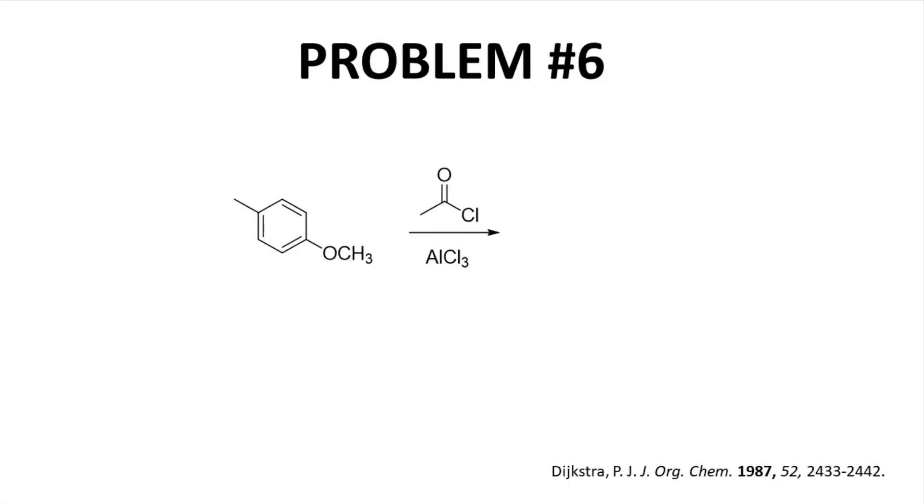Okay, problem six. Now we have two electron donating groups – one methyl and a methoxy. The methyl group will activate the ortho positions – here and here. The methoxy group will activate its ortho positions – here and here and here. Uh-oh. These two groups are activating different positions. Which one wins? Here is the major product. How do we explain this result?